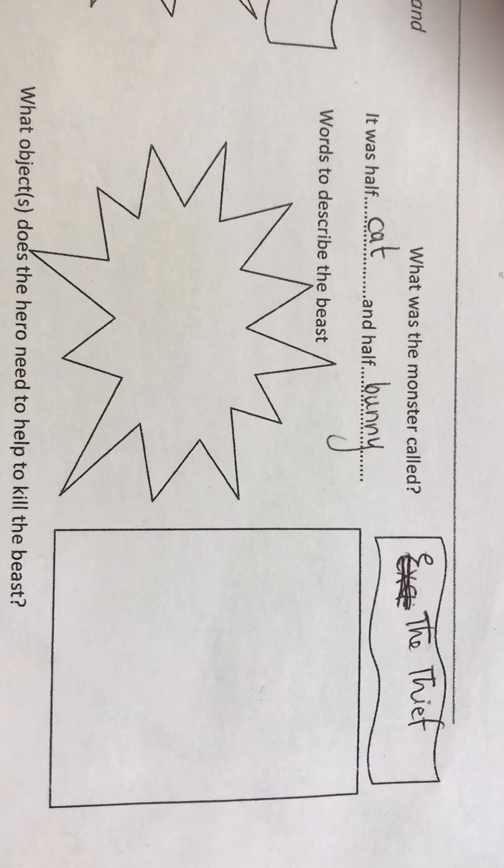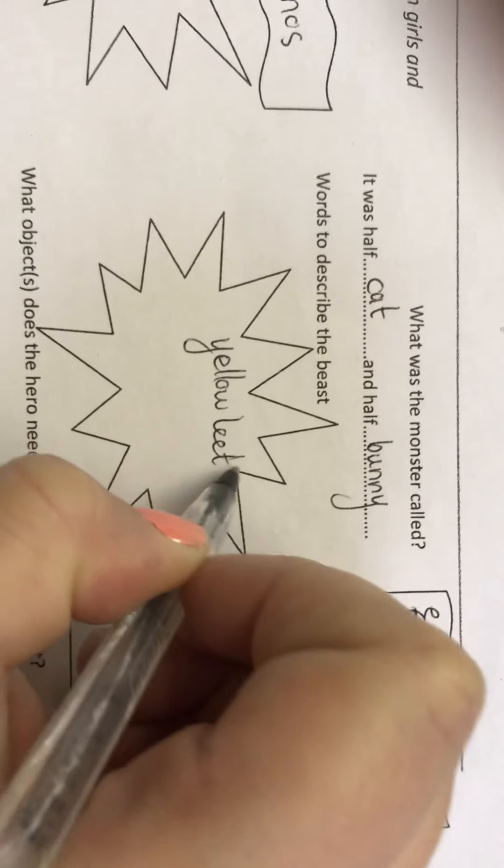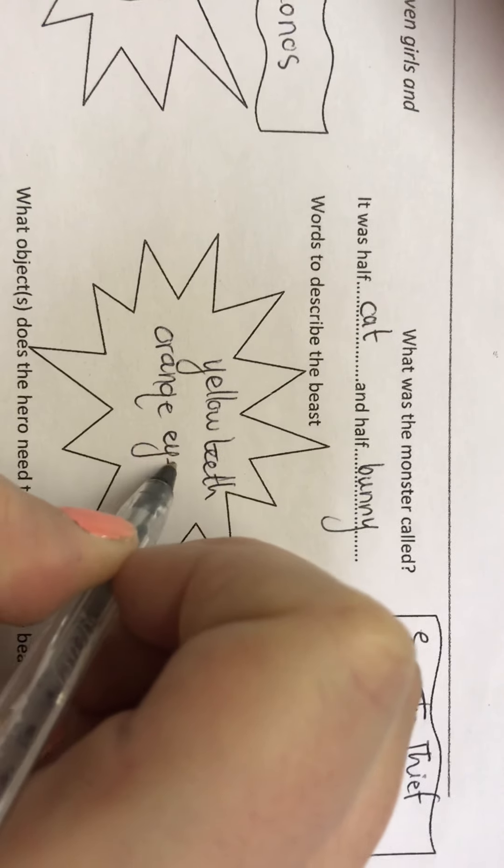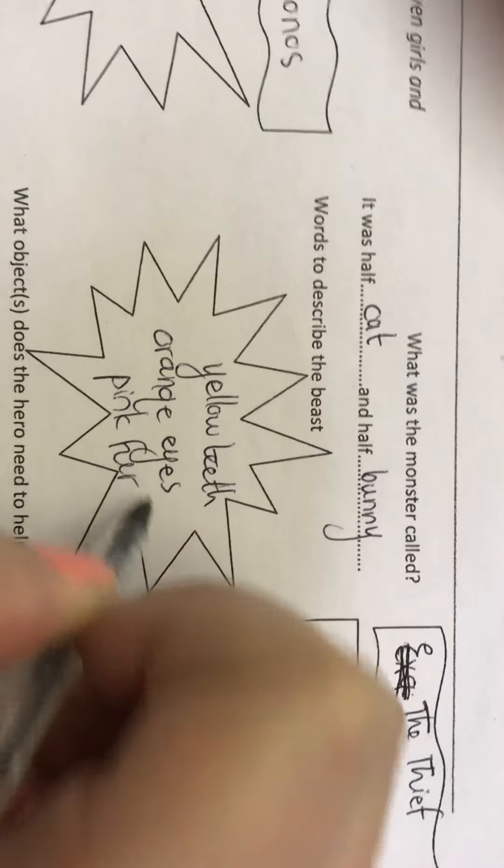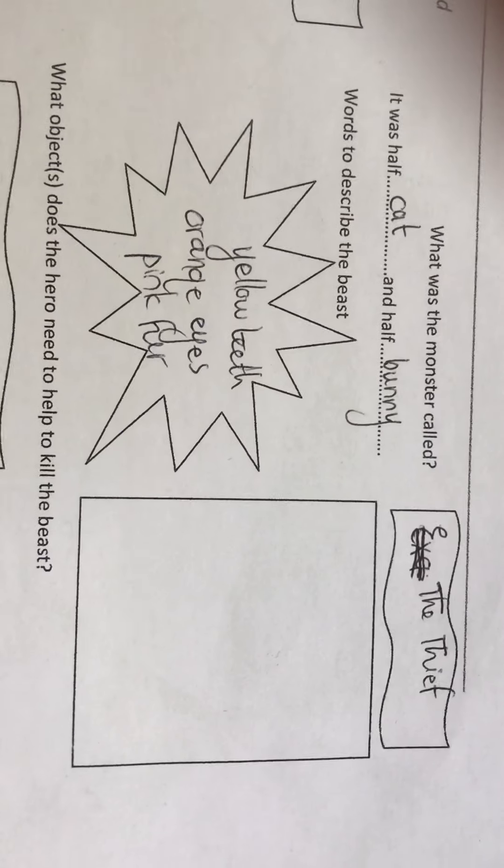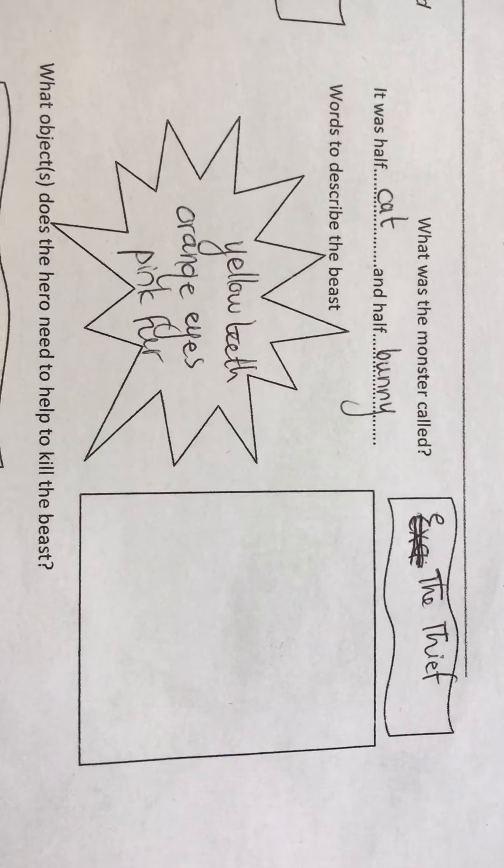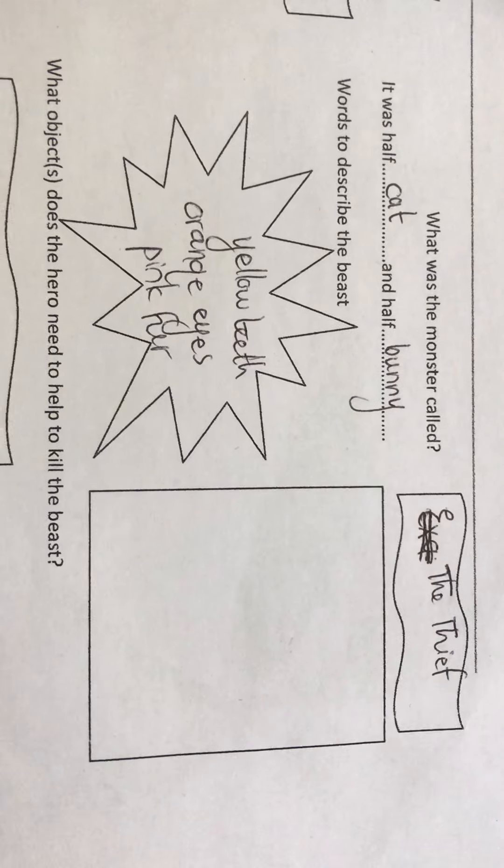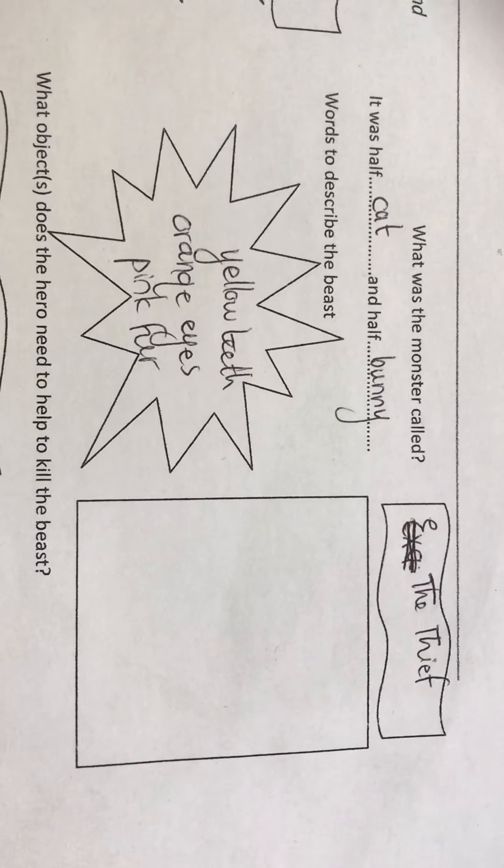Words to describe the beast: yellow teeth, orange eyes, and pink fur. That is my monster. It had yellow teeth, it had orange eyes, and it had pink fur. Oh my word, I can't wait to see what you guys come up with. I'm still trying to think of a better name though because that's honestly the most awful name.